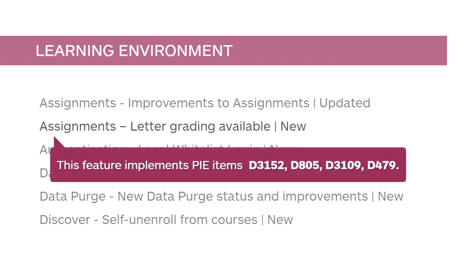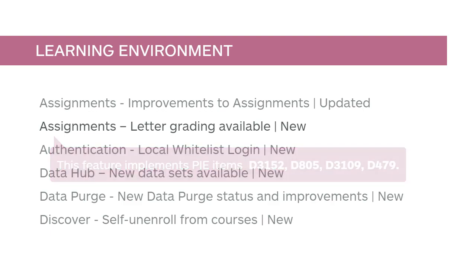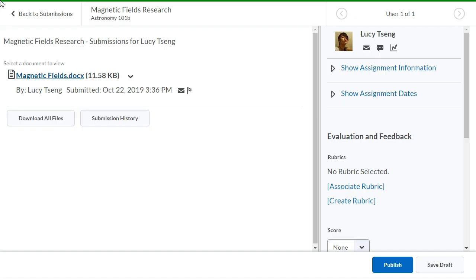This feature implements PIE items D3152, D805, D3109, and D479. When instructors create and evaluate an assignment, they can now use select box grade items.